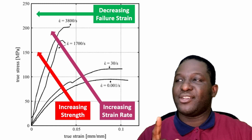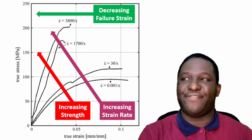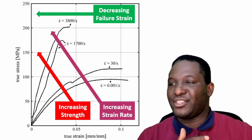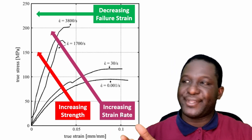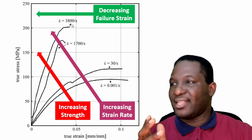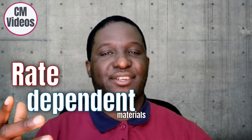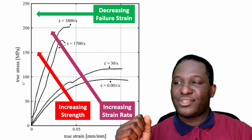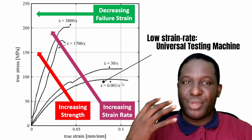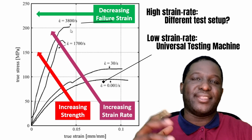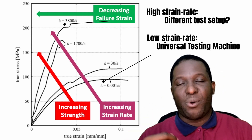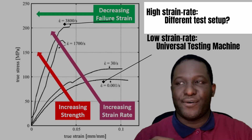The other thing you'll notice is that increasing strain rate also leads to a decrease in the failure strain of the material. Initially the failure strain was just over 10%, but at higher strain rates it drops to around 4%. So decreasing fracture strain corresponds with increasing strain rate. This is what defines a rate-dependent material, and it's important to find the right kind of experiment to investigate this dynamic response. In the low strain rate region, a universal tensile machine is useful, but in the high strain rate region, a new type of experiment is required.